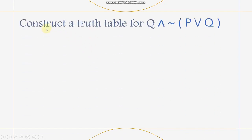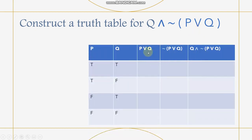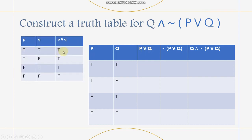For our first application question: construct a truth table for Q∧¬(P∨Q). We have three propositions, so we will have three given columns. Like PEMDAS, we first solve what is inside the parenthesis — the disjunction P∨Q. When true and true, the result is true. When true and false, it is true. When false and true, it gives true. When false and false, it gives false.